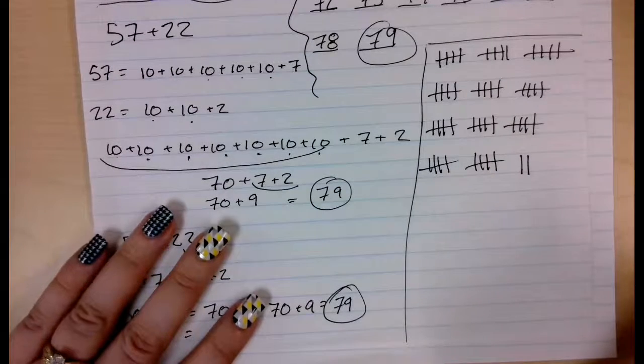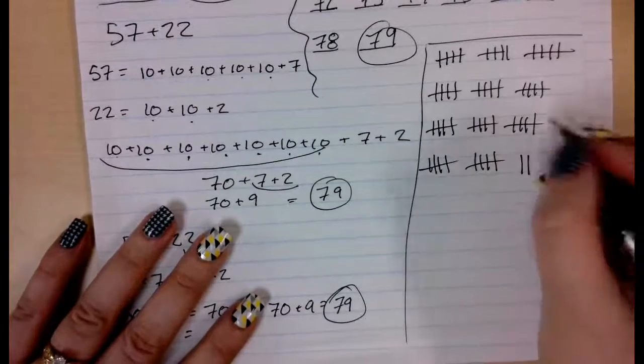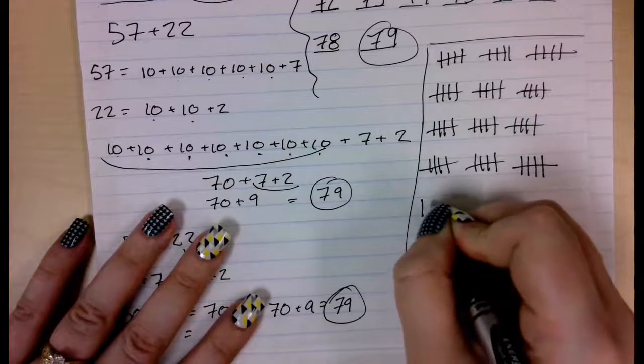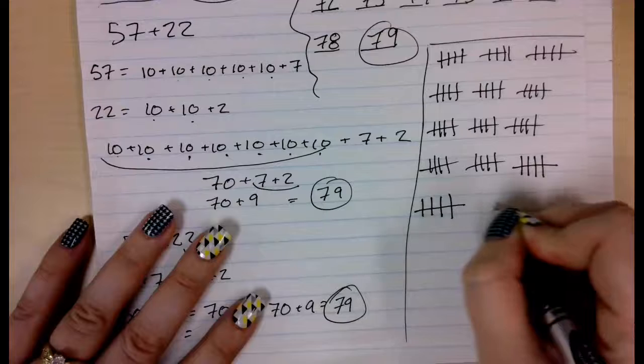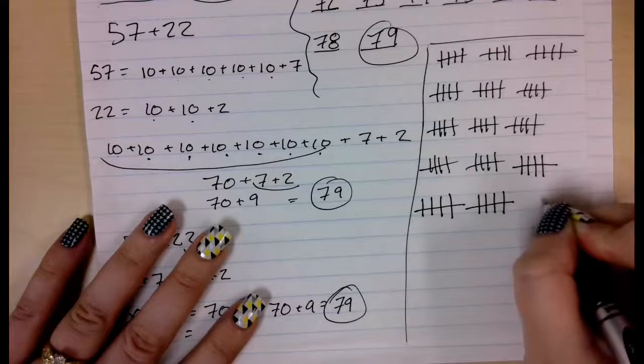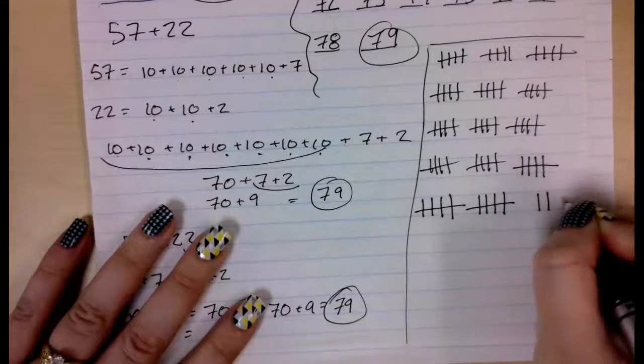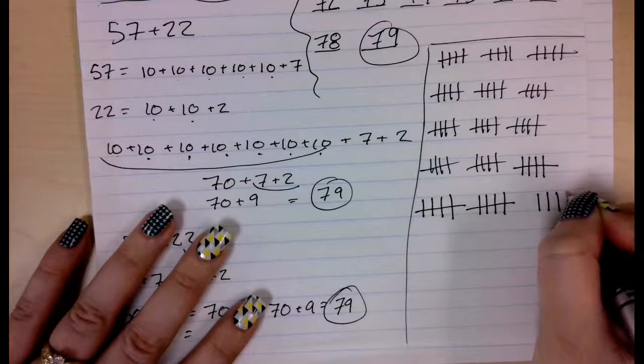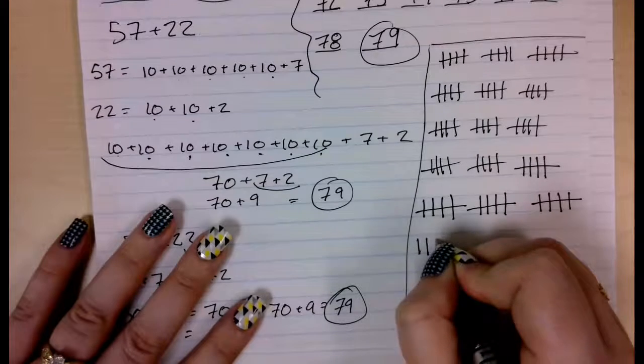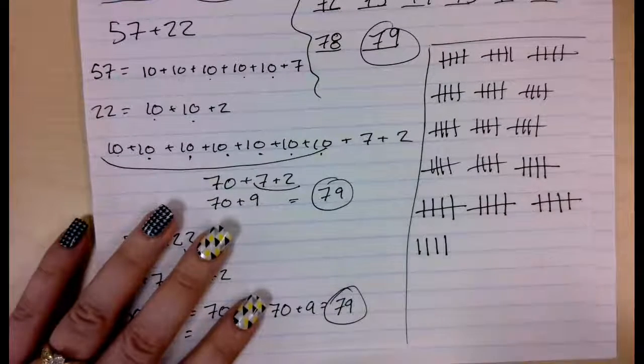1, 2, 3, 4, 5, 6, 7, 8, 9, 10, 11, 12, 13, 14, 15, 16, 17, 18, 19, 20, 21, 22.